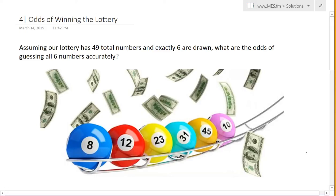So, in our lottery, we have a total of 49 numbers, and we have to pick 6 of them, and exactly all 6 must be drawn in order to win the jackpot.